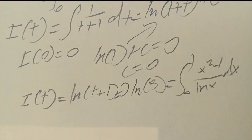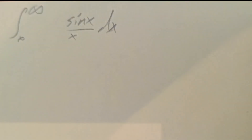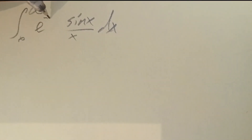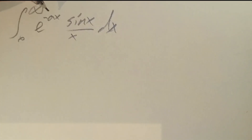Let me do another example. We've got the integral from 0 to infinity of sin(x) over x, dx. I can't integrate this directly right now. We need to add a little bit on — I'm going to add an exponential like e to the negative ax. If we use the chain rule with respect to a, that cancels out this x.